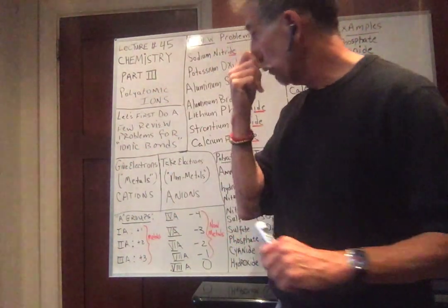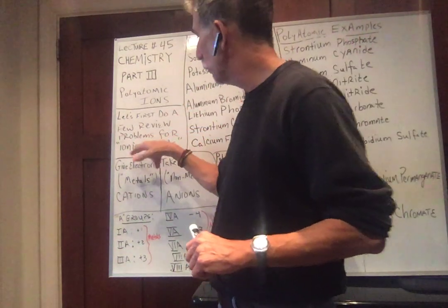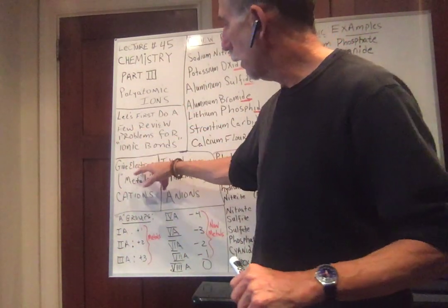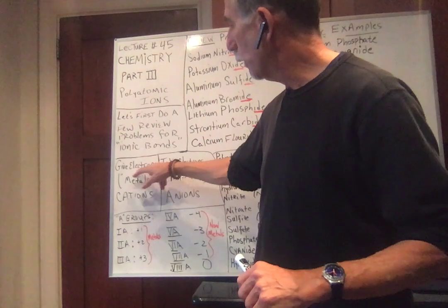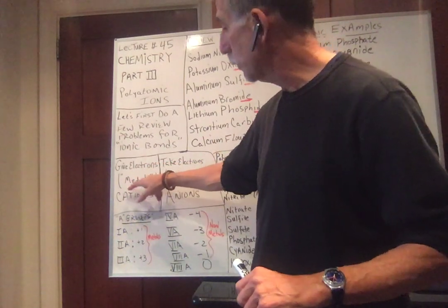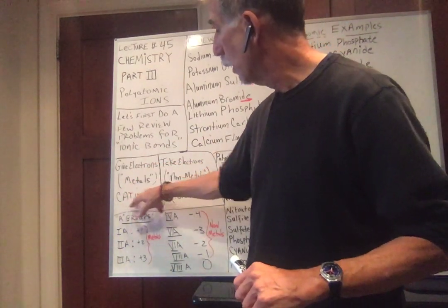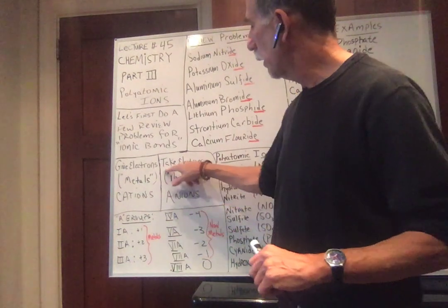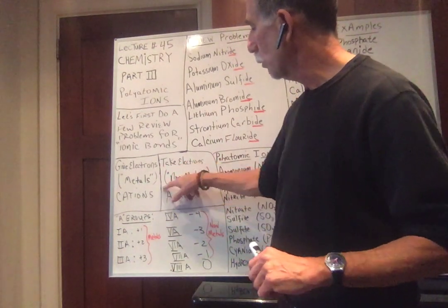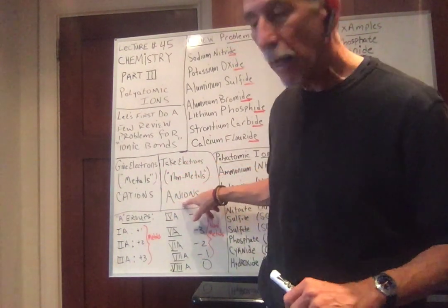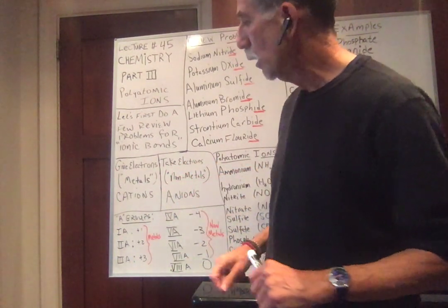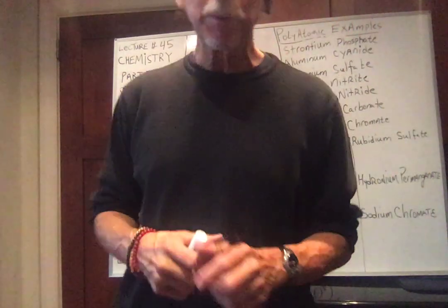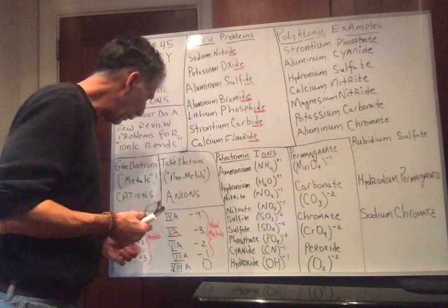So let's review from last time. We're going to do a few review problems. Remember, if you give electrons, that's what we call metals — they're the givers. They produce positive ions, cations. Things that take electrons are nonmetals; they're anions. And remember, we're only doing the A groups.